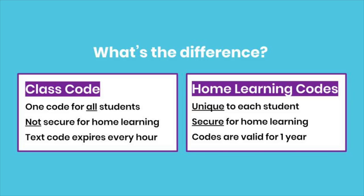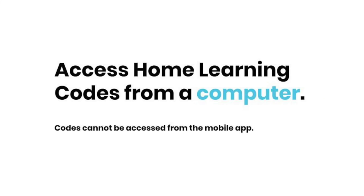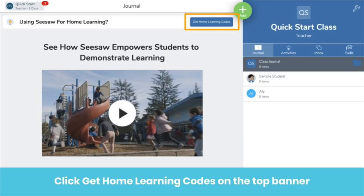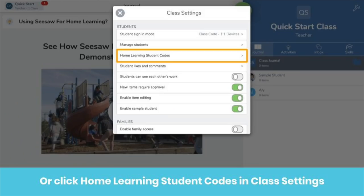By default, home learning codes also keep each student's journal private, so students and families cannot see the work of other students while at home. To access home learning codes, sign in on a computer. On your teacher dashboard, you will see a banner and a button that says 'Get Home Learning Codes.' You can also access home learning codes in class settings.